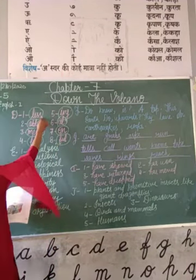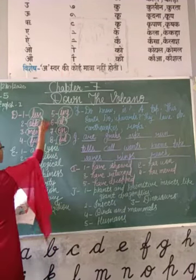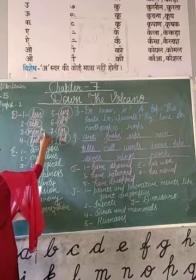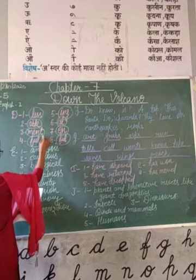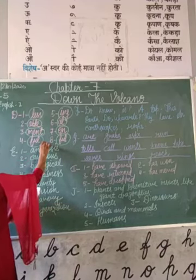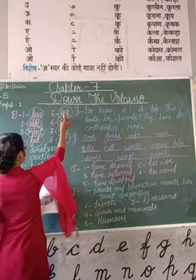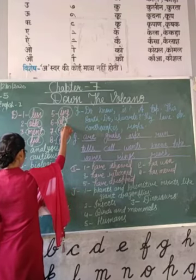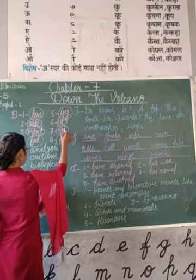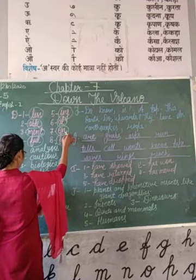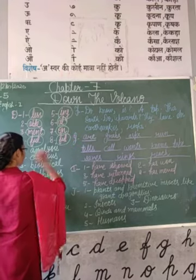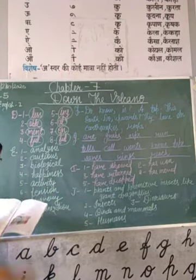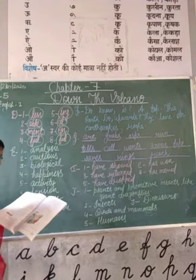So the answers are: first is 'heartless,' second is 'comfortable,' third is 'punishment,' fourth is 'peaceful,' fifth is 'training,' sixth is 'seasonal,' seventh is 'sharpened,' eighth is 'handful.' Now moving to the next exercise.